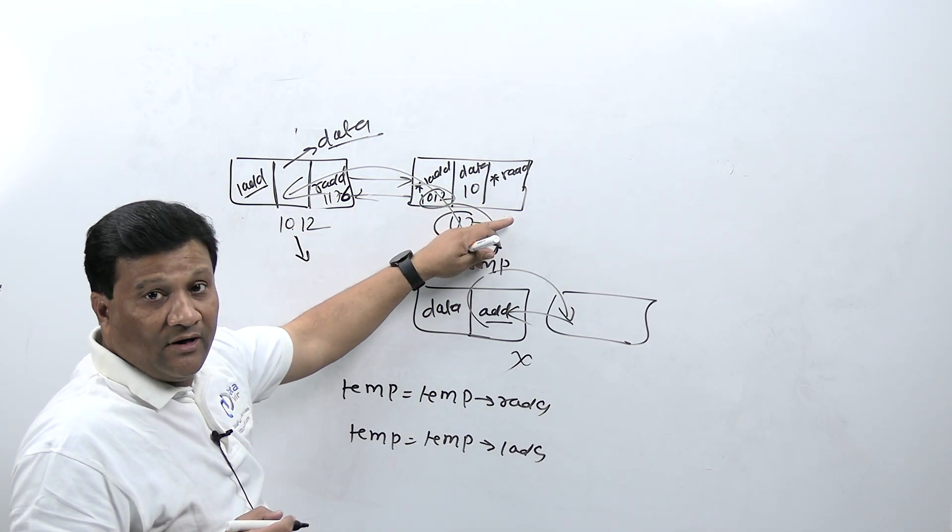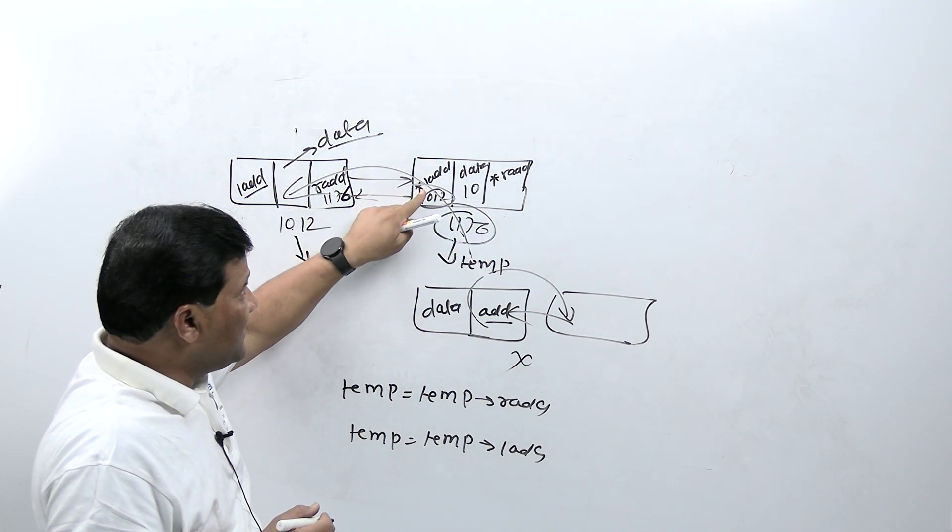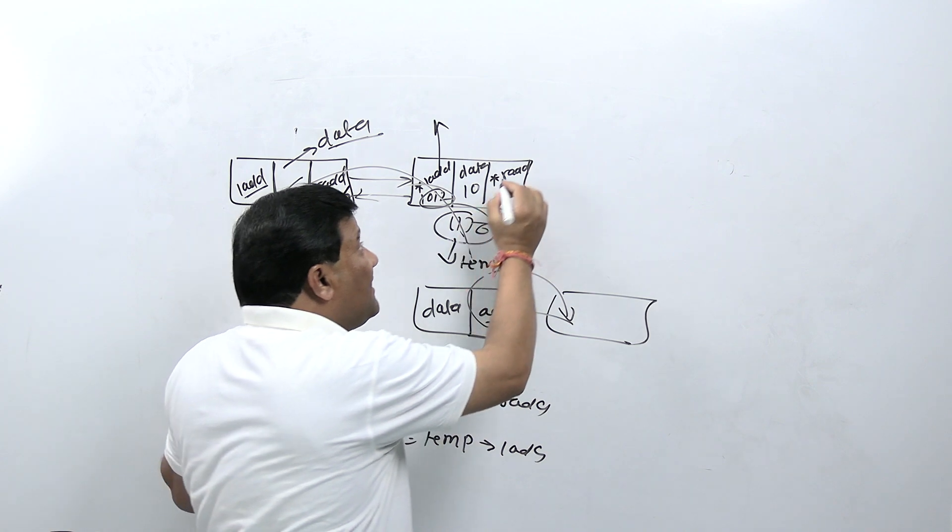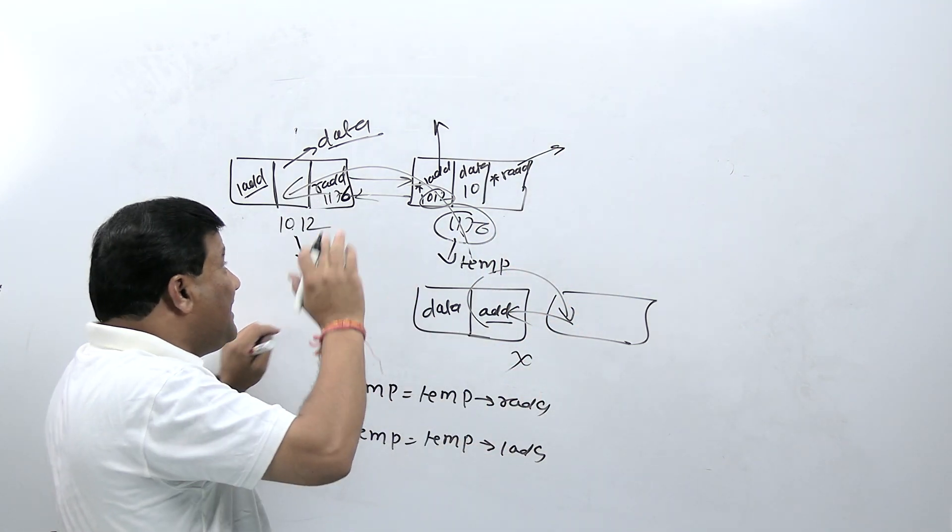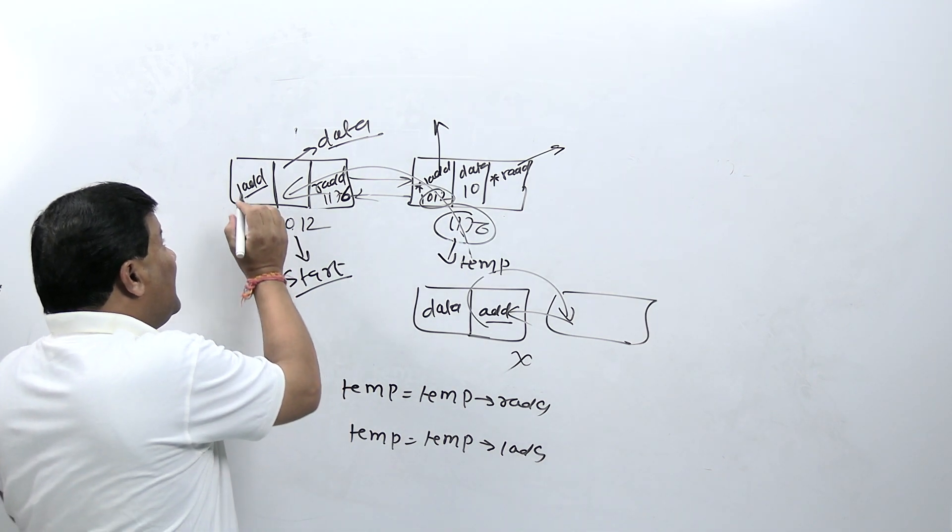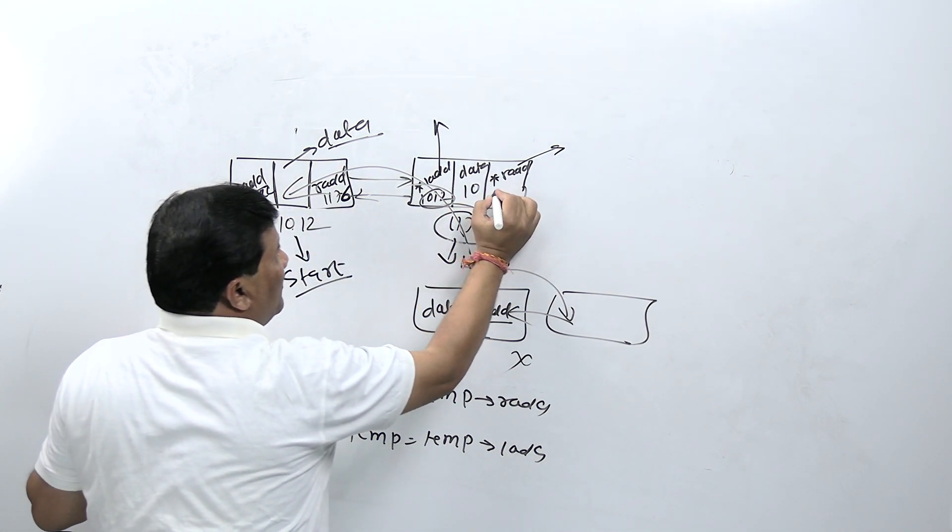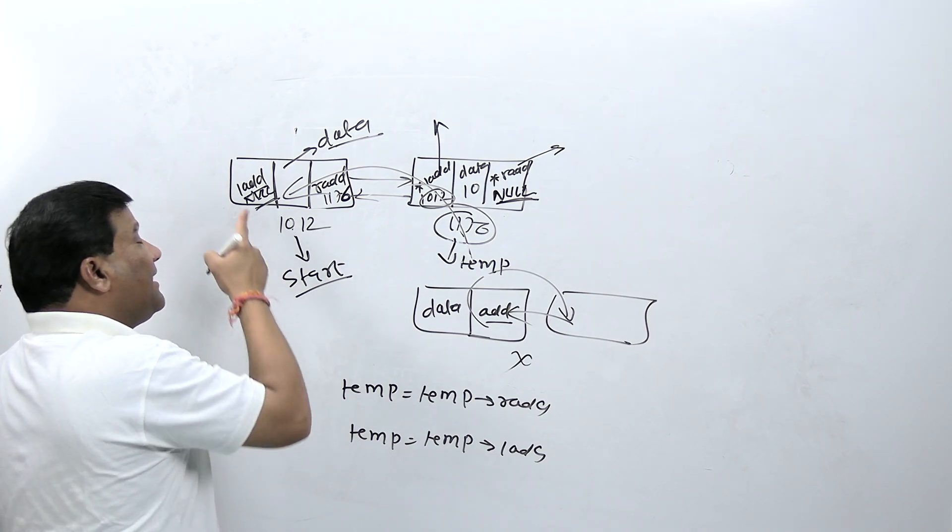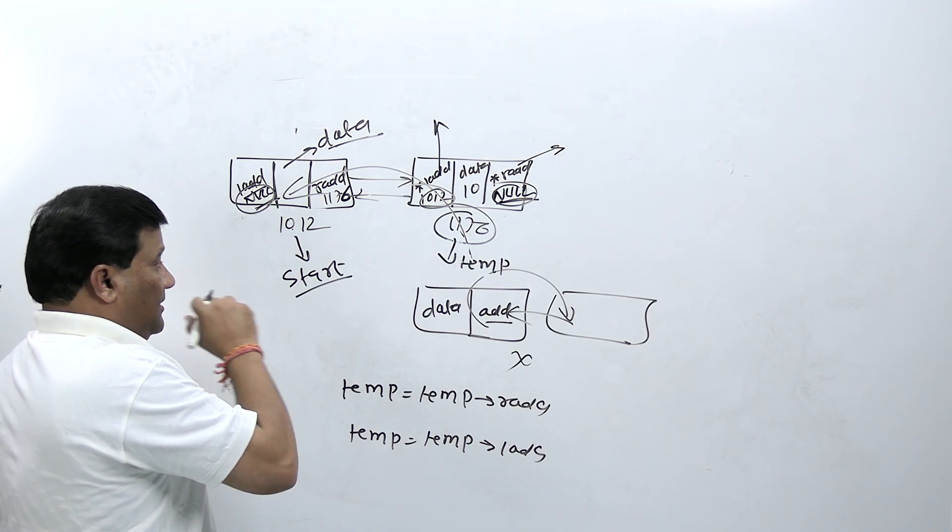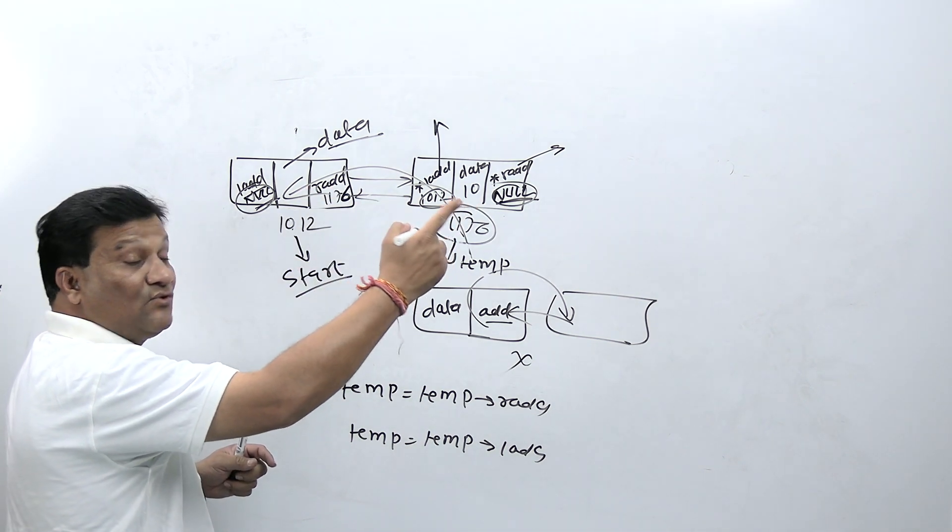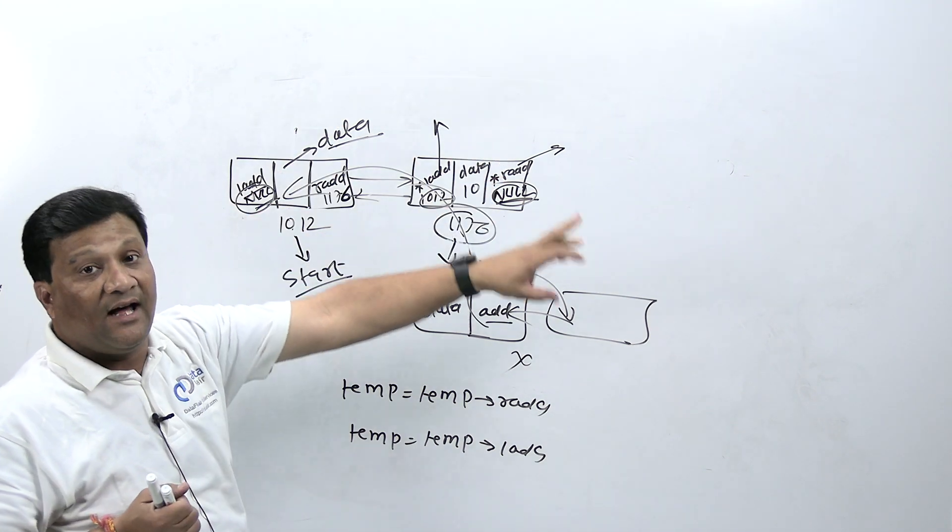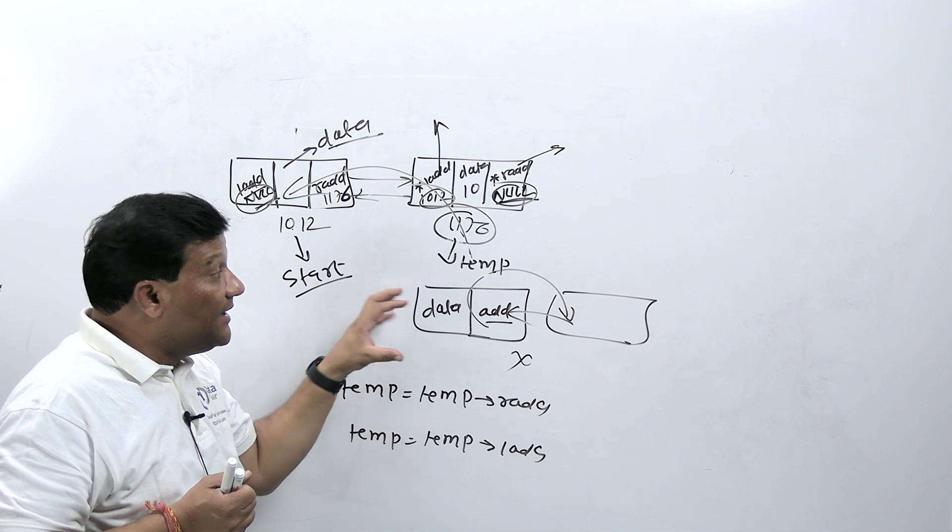Double linked list is a collection of nodes in which every node consists of three parts: left address part, right address part, and data part. Left address contains address of previous node, right address contains address of next node. In double linked list, first node is always at start position, and left address of first node and right address of last node is always null, just like single linked list. First node is always at start position, but last node's address is always null.